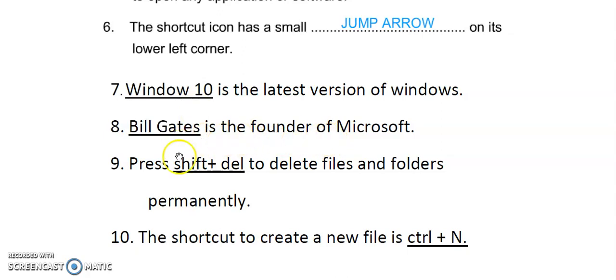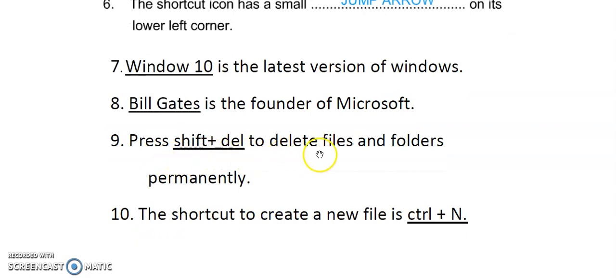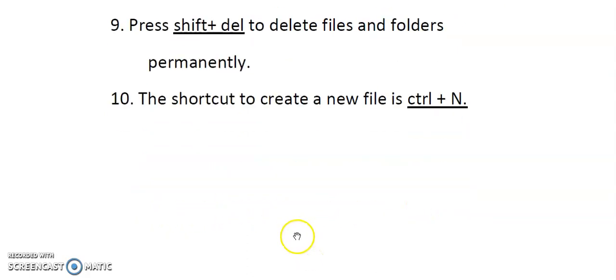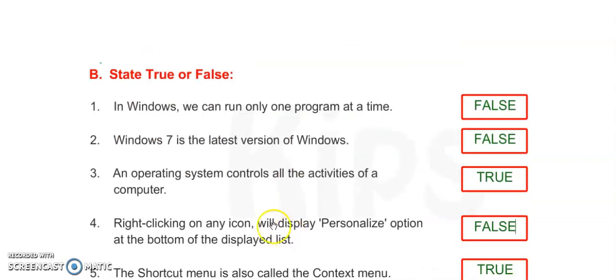Number nine: press shift plus delete to delete files and folders permanently. Number ten: the shortcut to create a new file is ctrl plus N. Now move on to the next exercise B, true or false.